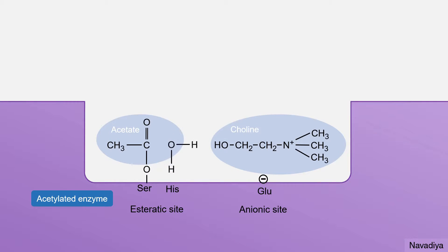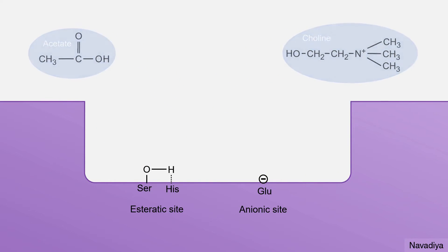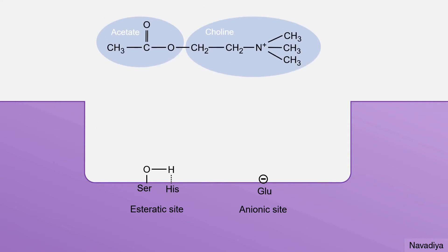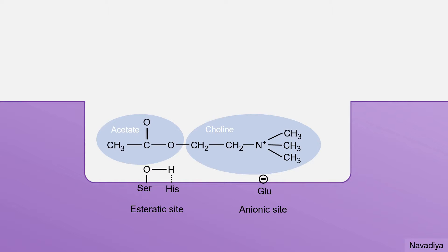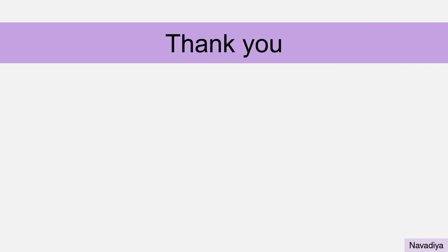The acetylated enzyme is very rapidly hydrolyzed, producing acetate and free enzyme. Acetate and choline then diffuse away, making space for more acetylcholine molecules. This entire process is very fast and takes approximately 150 microseconds. In the next video we will see various anticholinesterase agents.